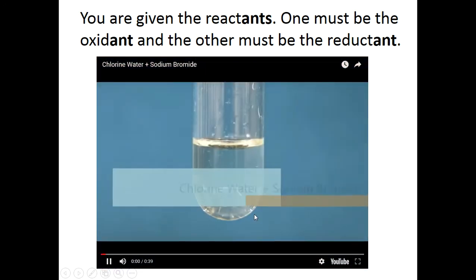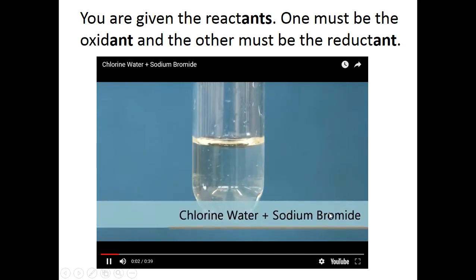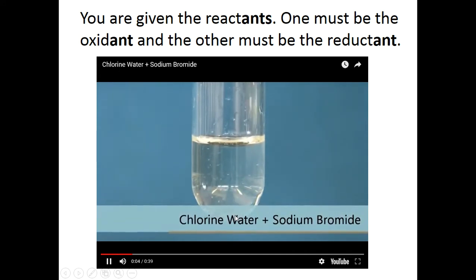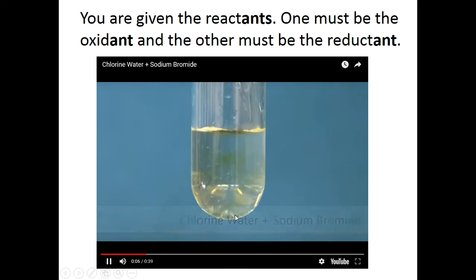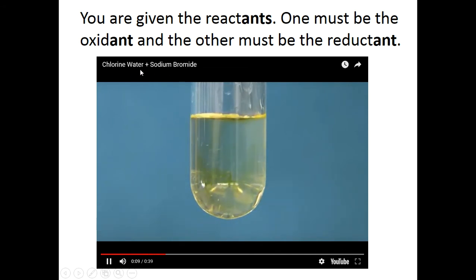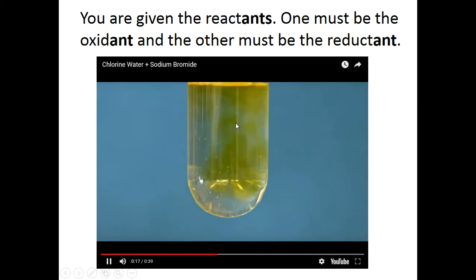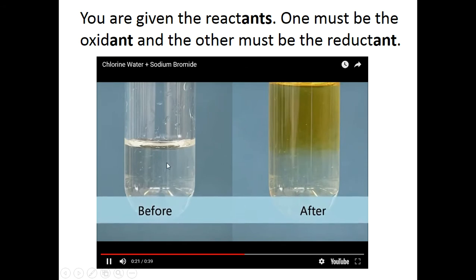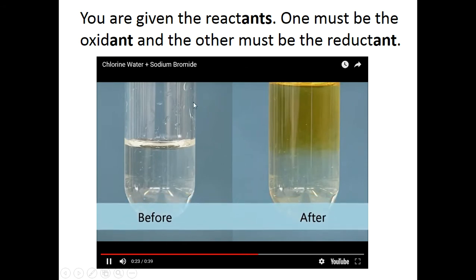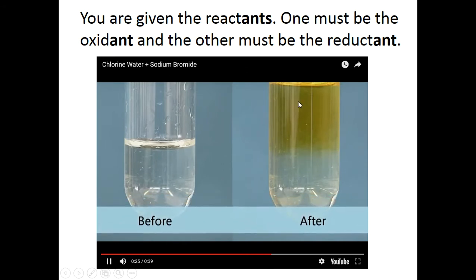We've got chlorine water reacting with sodium bromide. So one of them will be the oxidant, the other one will be the reductant, and you've also got to work out which one for sodium bromide is a spectator ion and which one is not. Notice as we're adding these two solutions together, it's becoming an orangey color. So we started off with a colorless solution, added another colorless solution, and it became this orangey color.